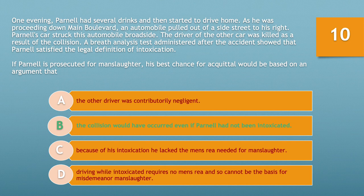We have a guilty mind — depraved heart or criminal negligence from driving while intoxicated — which is essentially a presumption. And we have concurrence, as the guilty act and the guilty mind occurred concurrently. The remaining issue is causation. Therefore, if Parnell is prosecuted for manslaughter, his best chance for acquittal would be based on an argument that the collision would have occurred even if Parnell had not been intoxicated.